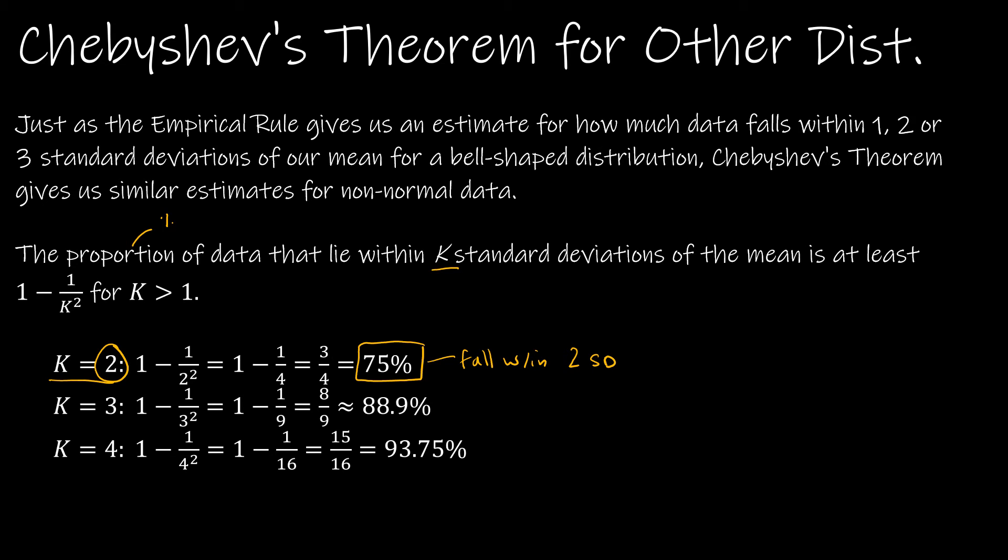What about for K equals 3? Again, same formula. I'm just using 3 instead. 1 - 1/3² is 1 - 1/9 or 8/9, which is about 88.9% of our data falls within three standard deviations. And using the same process, 93.75% falls within four standard deviations. So pretty easy math there.